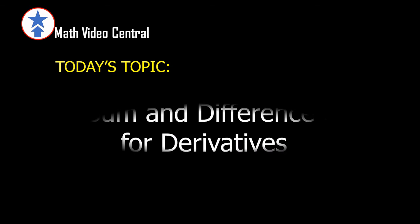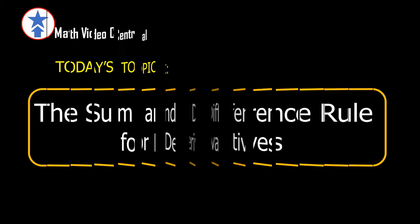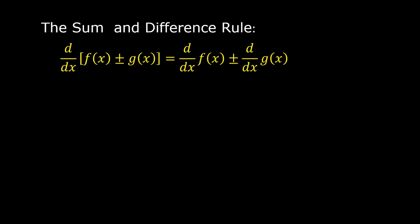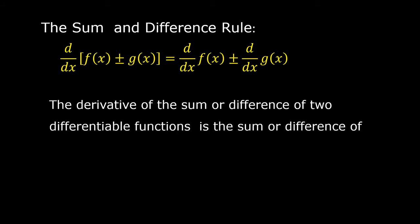Today's topic is the Sum and Difference Rule for Derivatives. The derivative of f(x) ± g(x) with respect to x is equal to the derivative of f(x) with respect to x plus or minus the derivative of g(x) with respect to x. This means the derivative of the sum or difference of two differentiable functions is the sum or difference of their derivatives.